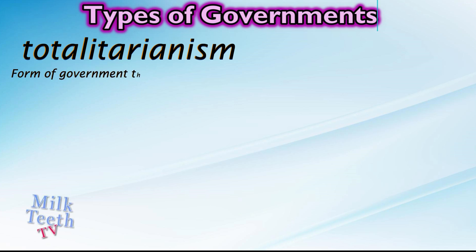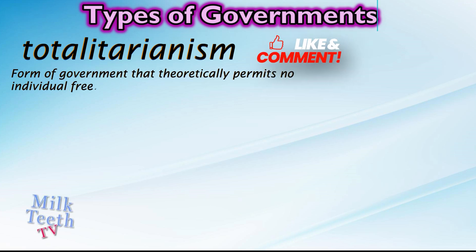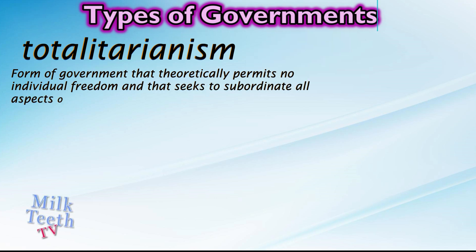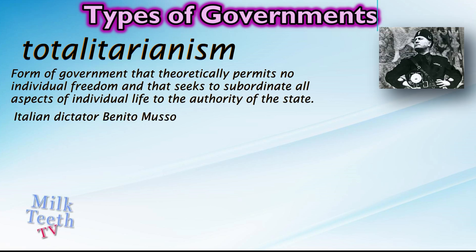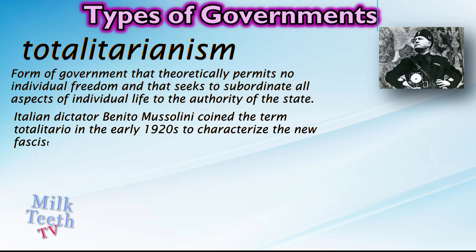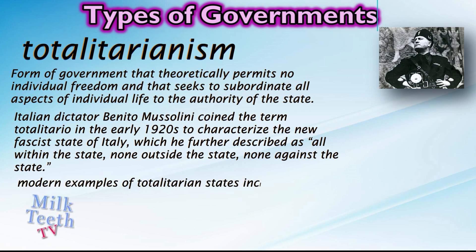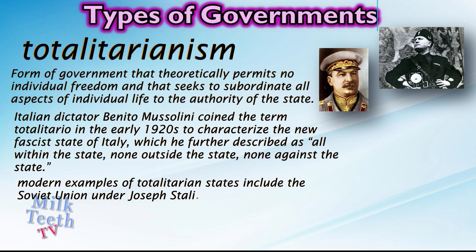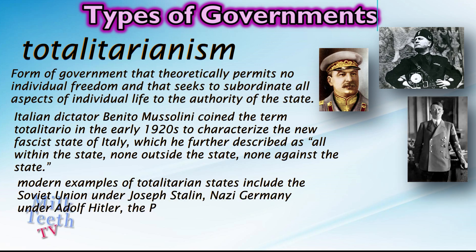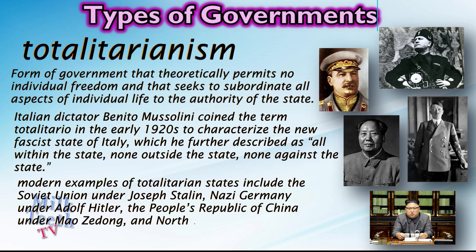Totalitarianism: It is a form of government that theoretically permits no individual freedom and seeks to subordinate all aspects of individual life to the authority of the state. Italian dictator Benito Mussolini coined the term 'totalitario' in the early 1920s to characterize the new fascist state of Italy, which he described as 'all within the state, none outside the state, none against the state.' Modern examples of totalitarian states include the Soviet Union under Joseph Stalin, Nazi Germany under Adolf Hitler, the People's Republic of China under Mao Zedong, and North Korea under the Kim dynasty.